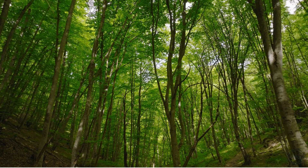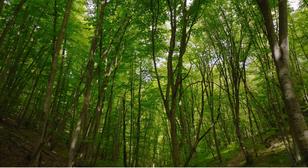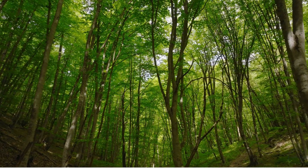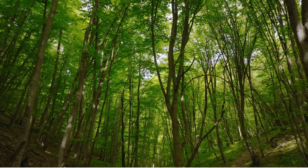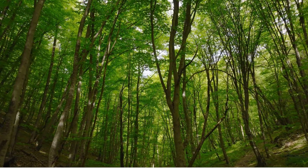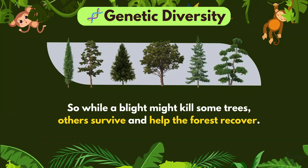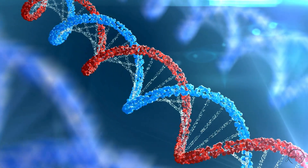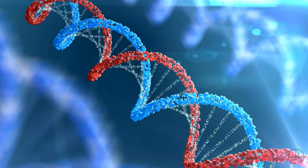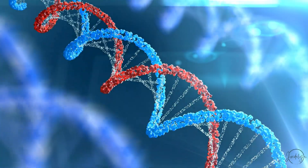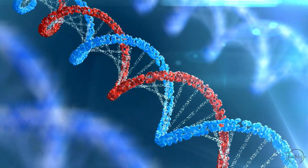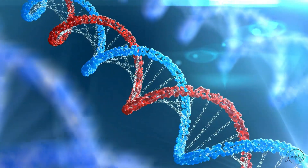Likewise, in the same forest, some trees may be genetically better at resisting certain pests or diseases. So while a blight might kill some trees, others survive and help the forest recover. This built-in variation is what keeps species resilient, evolving, and able to face future challenges.